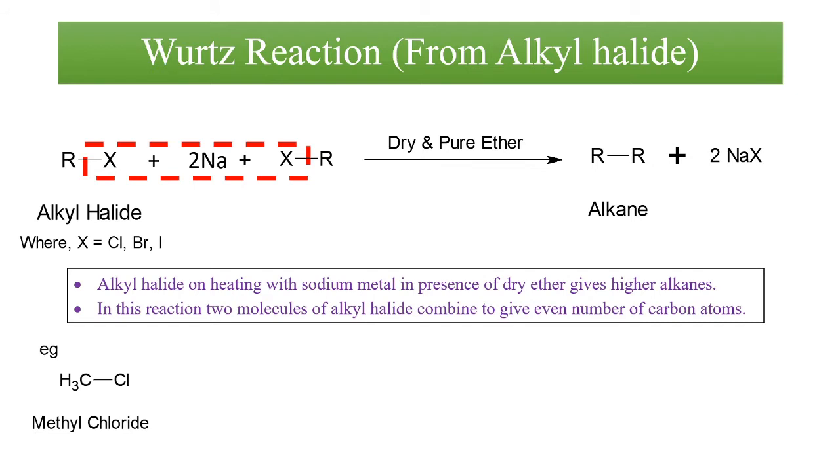For example, let us take methyl chloride on reaction with sodium in presence of dry and pure ether. Now these two methyl groups will combine to give us the higher alkane, that is ethane, with the byproduct NaCl.